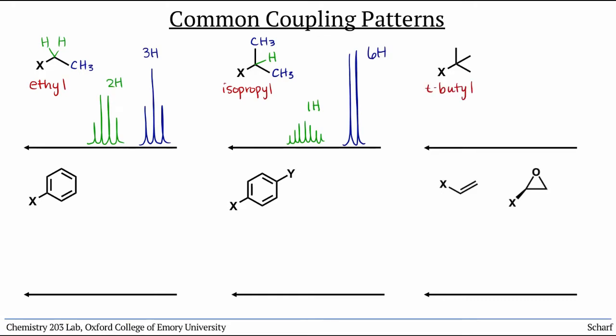A t-butyl group has a large singlet for all 9 of the equivalent hydrogens.